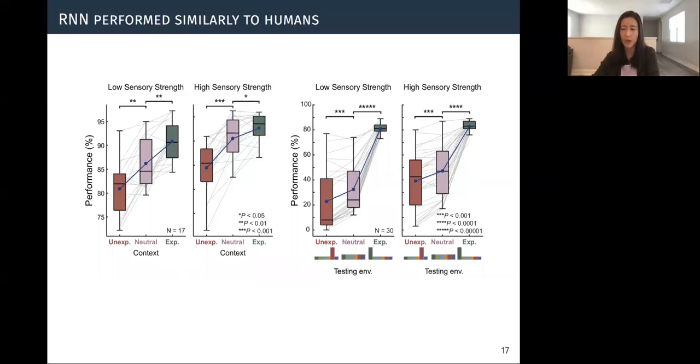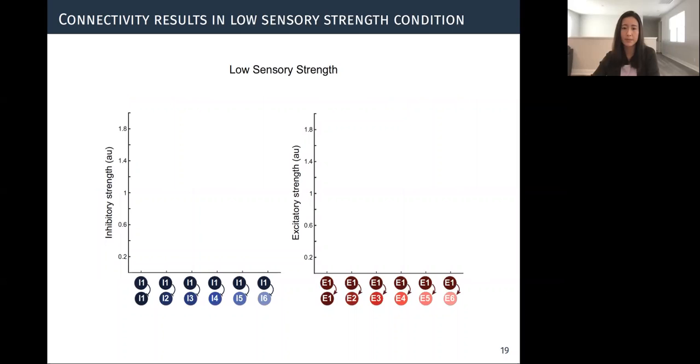So in our study, that would be stimulus one. So in order to investigate if such subgroup of neurons also exists in our recurrent neural network model, we first classify all the neurons in each trained RNN model based on their firing patterns in response to six stimuli. So for example, if a neuron fired more often when stimulus one, which is the expected stimulus was presented, then that neuron would be assigned to the stimulus one cluster. So using this method, we identify six subgroups of neurons in each recurrent network model. And for each subgroup, we then characterize its connectivity patterns to the rest of the subgroups.